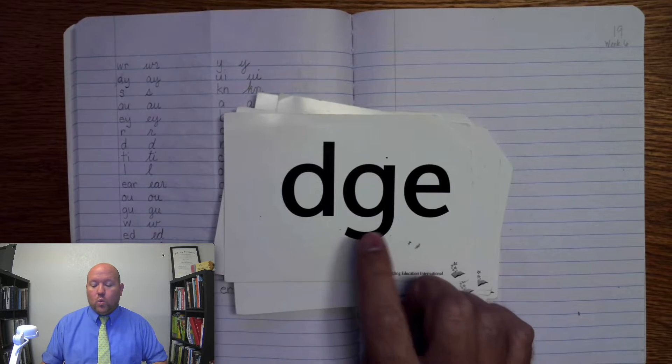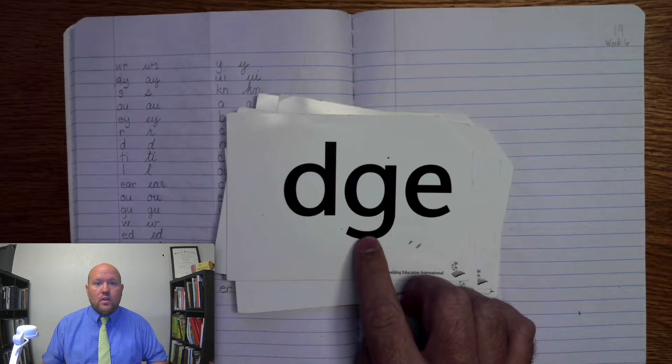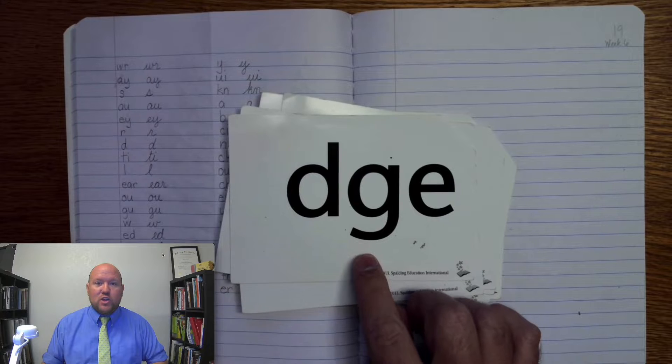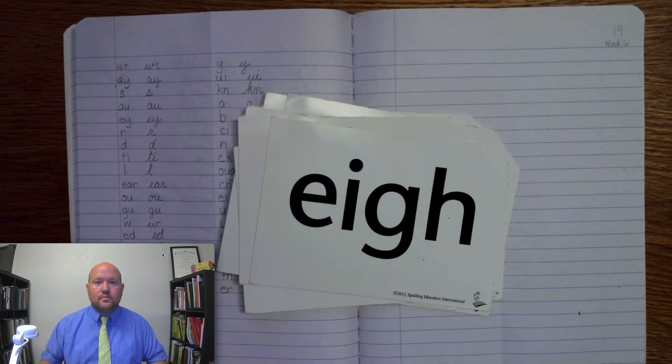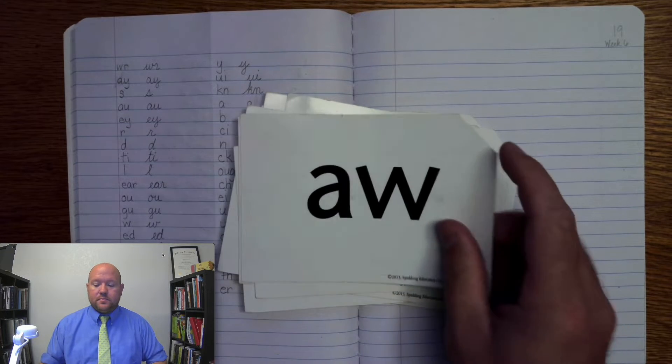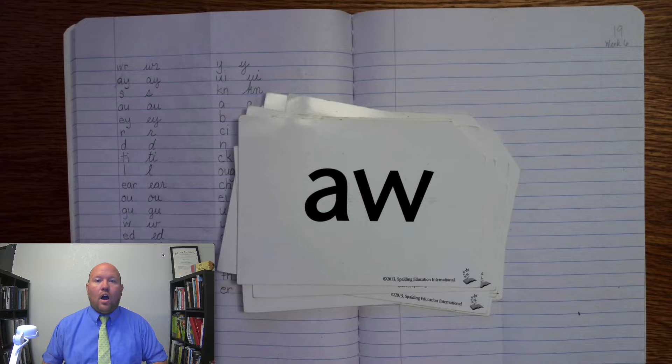When can it say J? It can say J after a single vowel that says its first sound. A, four letters. M, two letters. Ah.